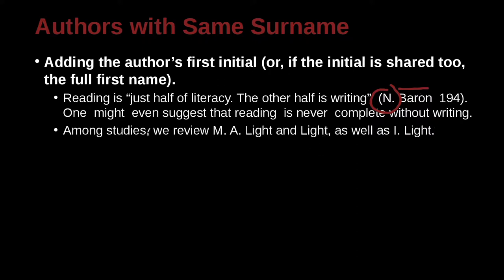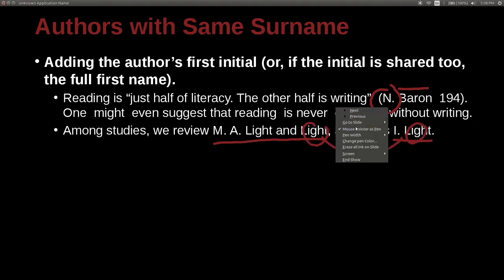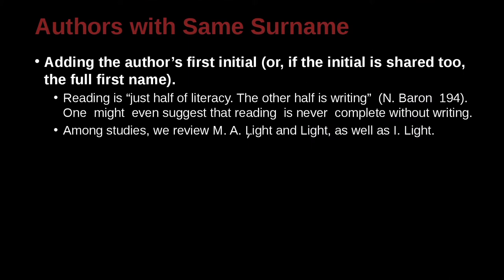Among studies, we review M.A. Light, N. Light, as well as I. Light. So I. Light is one author. M.A. Light and Light are different authors. This Light and this Light are actually the same person, but that's not the key point. The key point is the first author and the first author of the same last name.